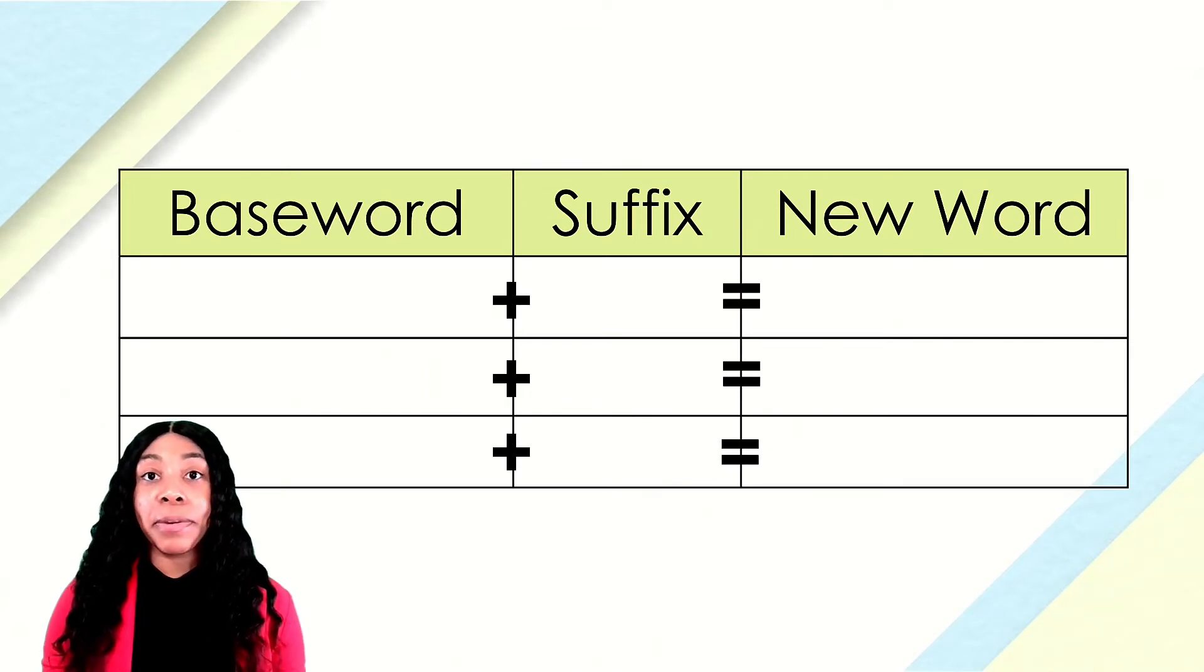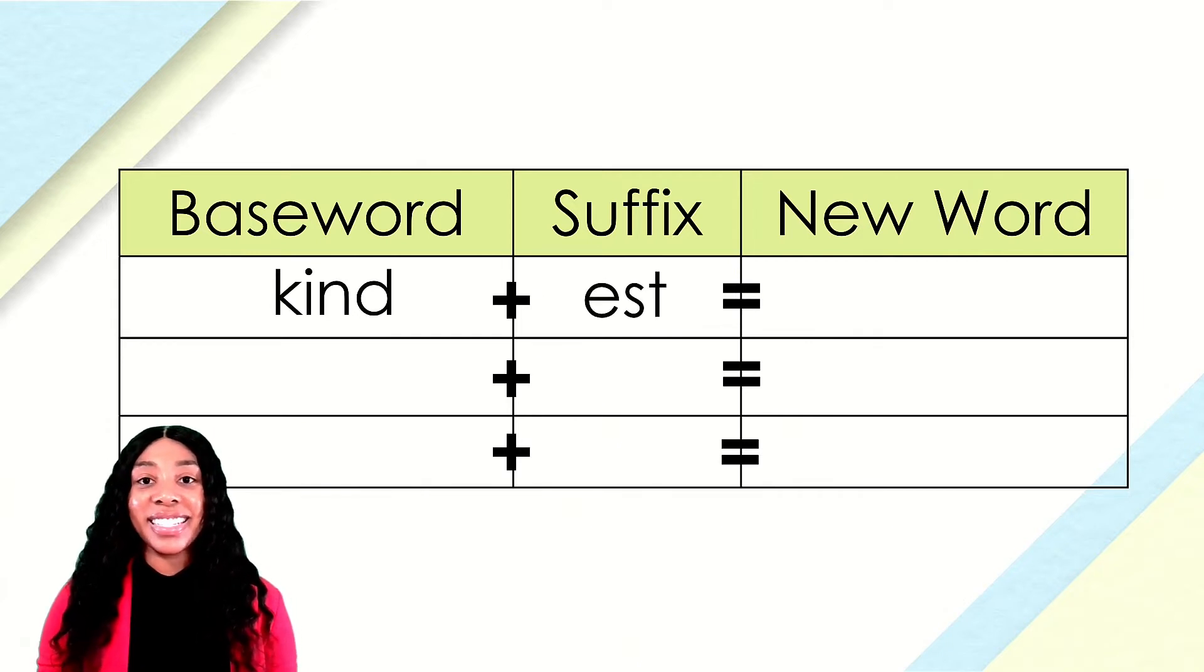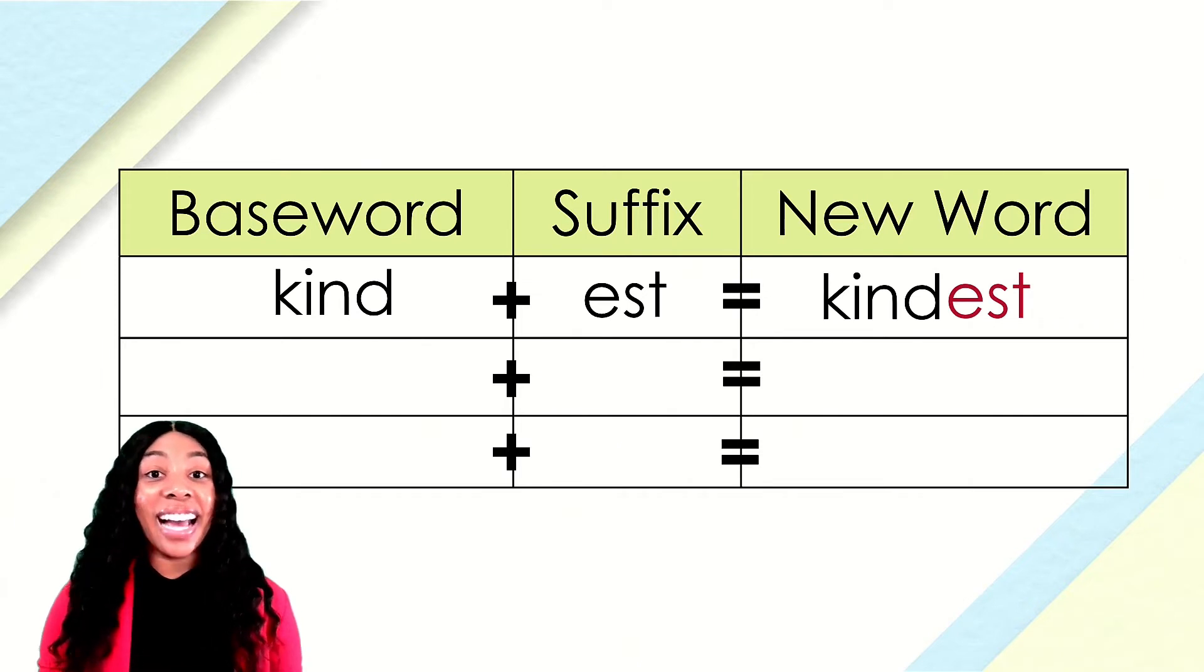Go ahead and get your paper and pencil ready. It is time to write down words that we build. Let's go. The first base word is kind. The suffix is ess. If we put the base word kind together with the suffix ess, what new word do we make? Kindness. Notice that adding a suffix to this word did not change the spelling of the base word. Kindness describes someone who is the most kind. Go ahead and write down the word kindness on your paper.